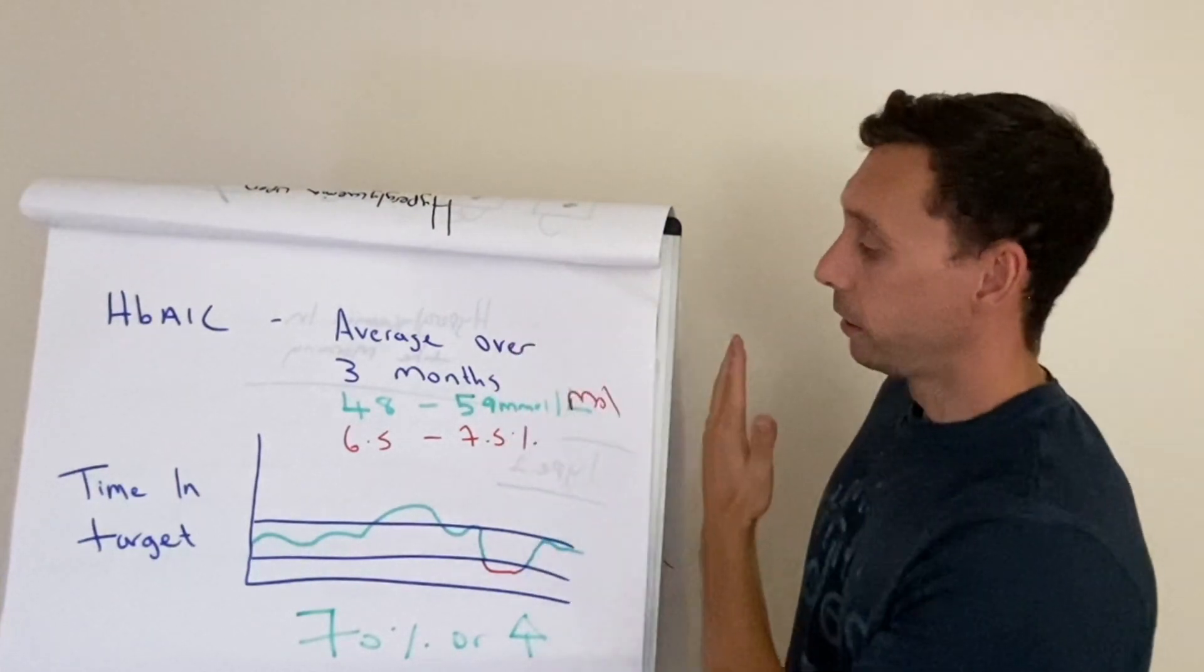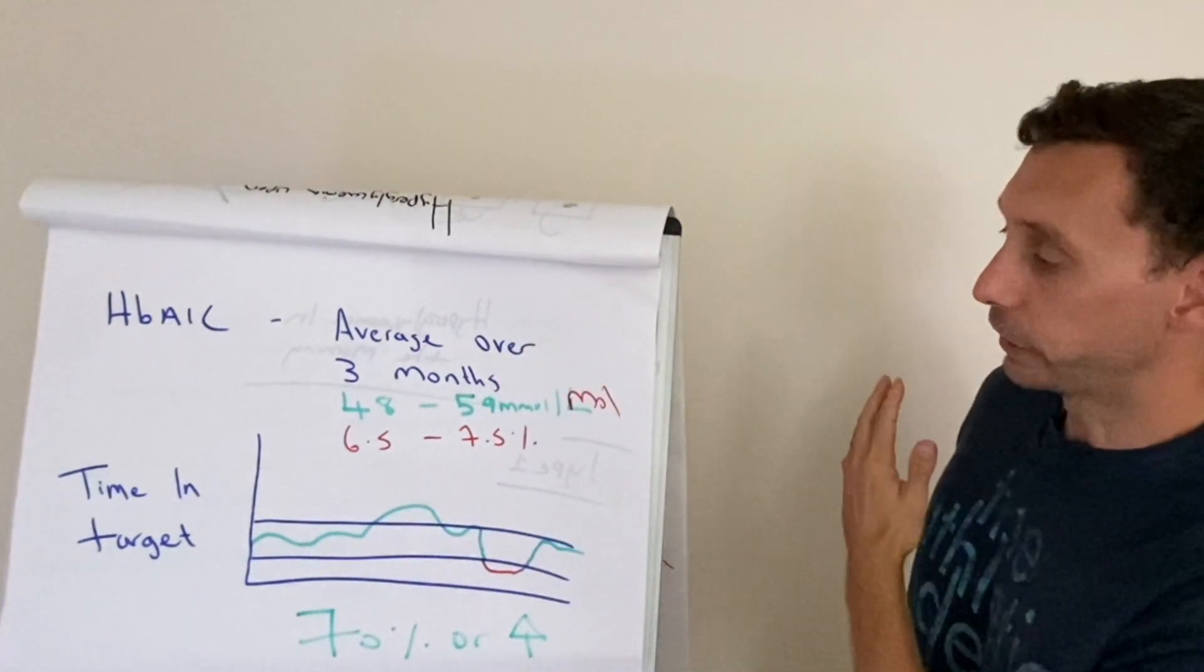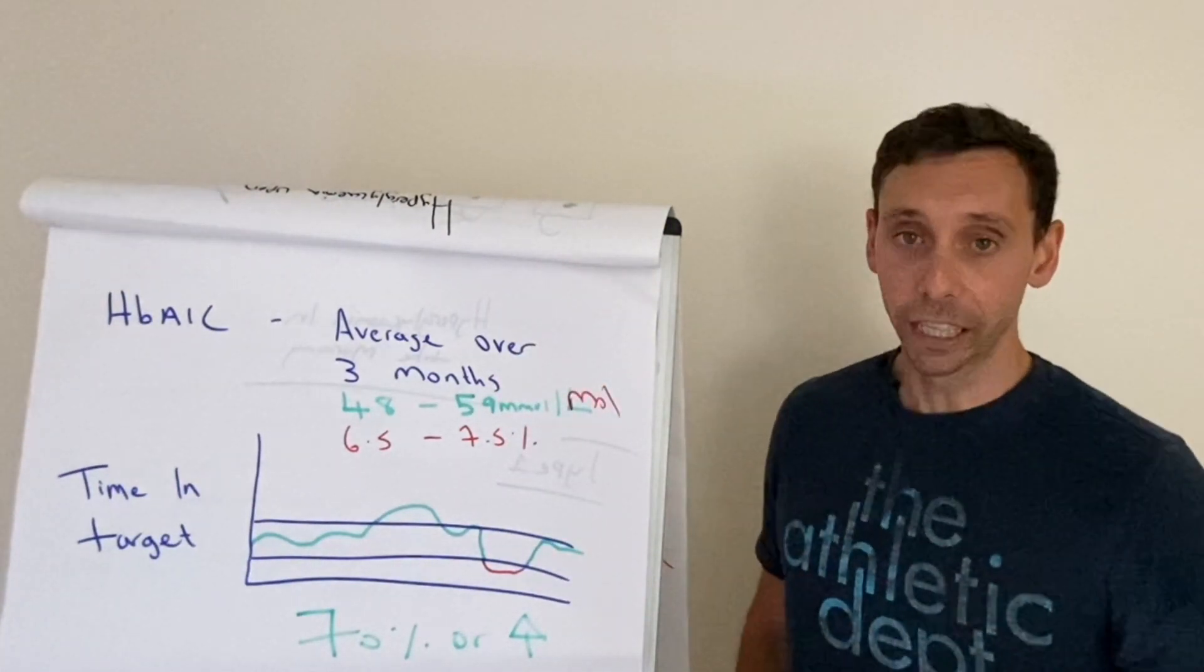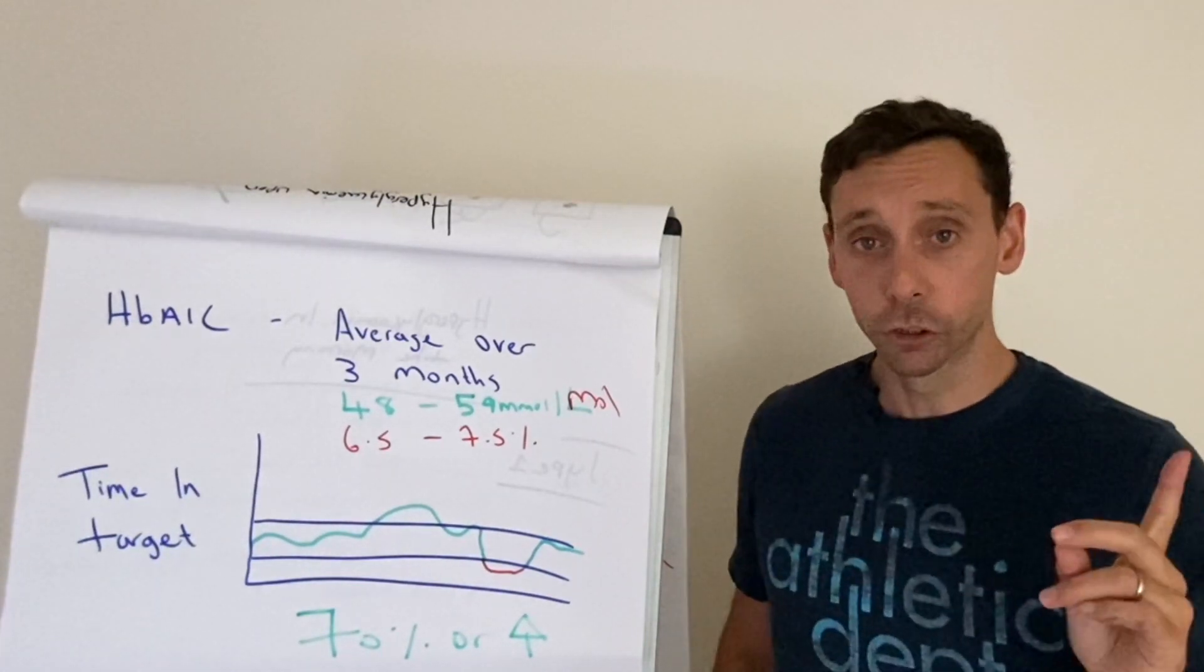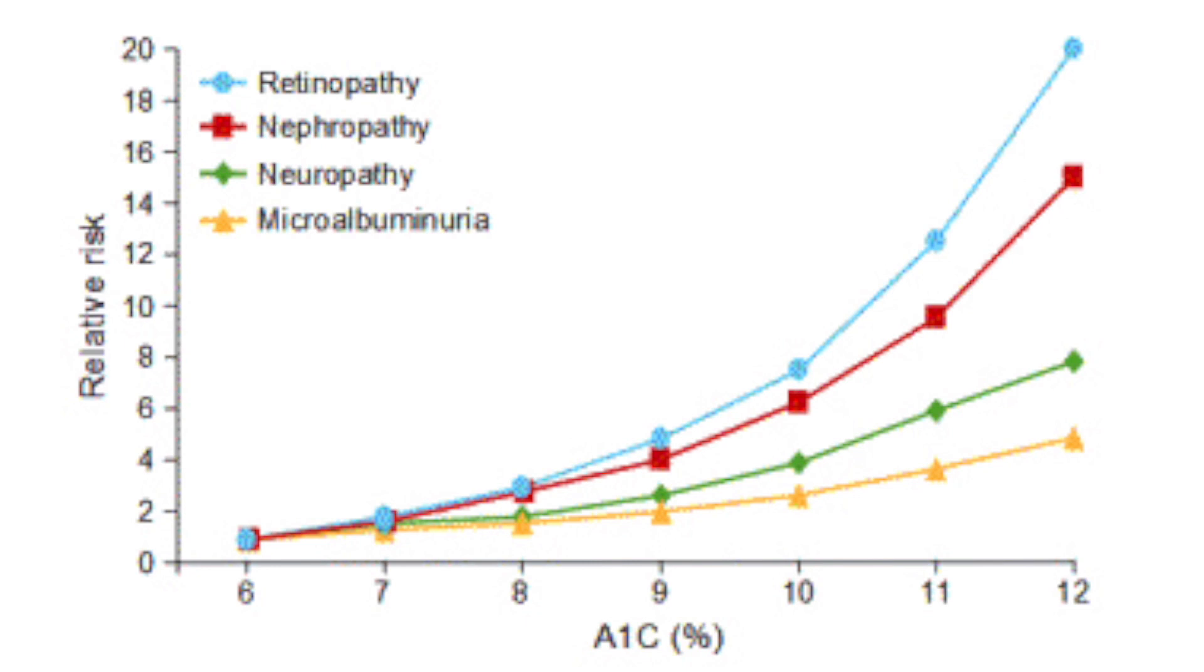Now, as you get higher and further away from these figures, this is when the risk of complications start to increase. So I'll pull up a graph on the screen. And as you can see, as the glucose levels get higher, the risk of complications to the eyes, the kidneys, cardiovascular system, amongst many others, really starts to increase, which is why your diabetes team might be really keen to get on top of high glucose levels.